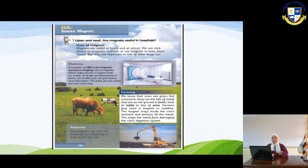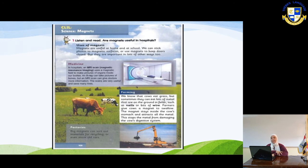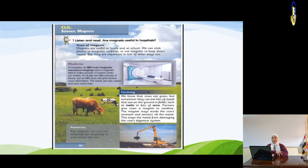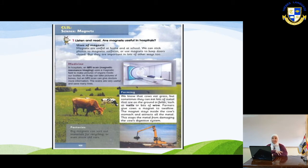An X-ray can take pictures of our bones, but an MRI scan can give doctors much more information. These scans are very useful and save many lives. So MRI uses a big magnet inside it, making magnets very important in hospitals.